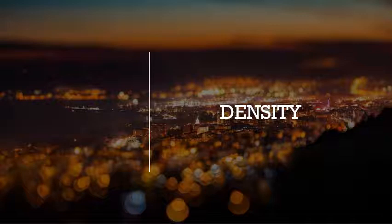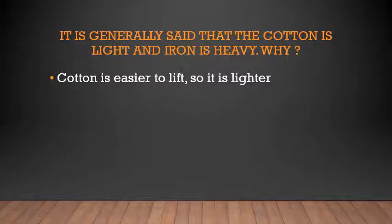Then in page number 149 there is density. D-E-N-S-I-T-Y. What is density? Now this question is in your textbook also and they have given two lines to write the answer. Write down this answer in that place. It is generally said that the cotton is light and iron is heavy. Why? Why is cotton light and why is iron heavy? What is the matter?